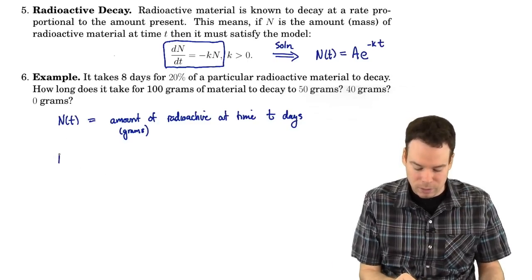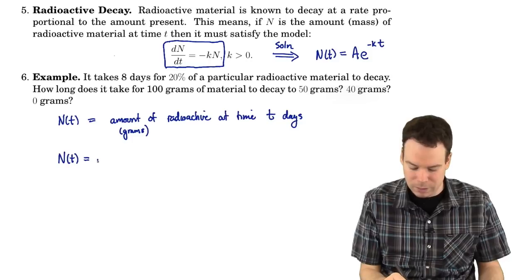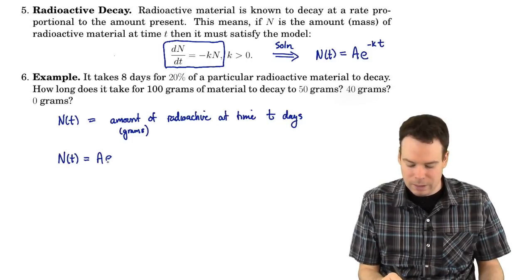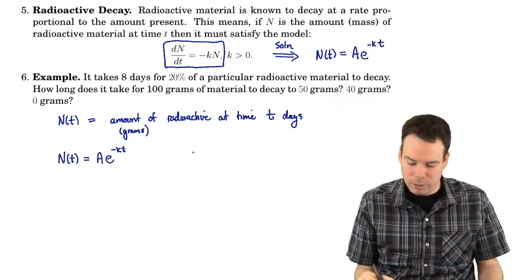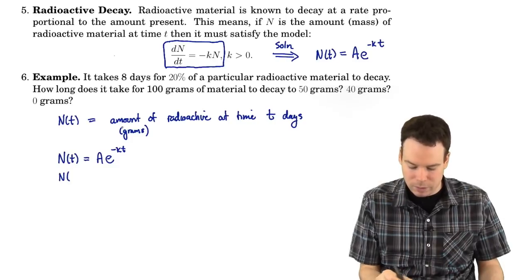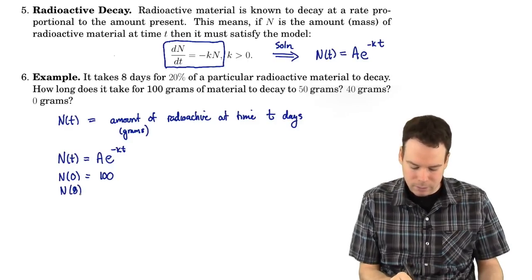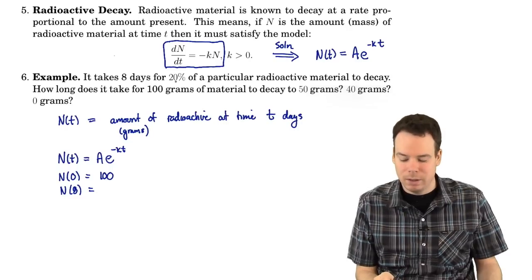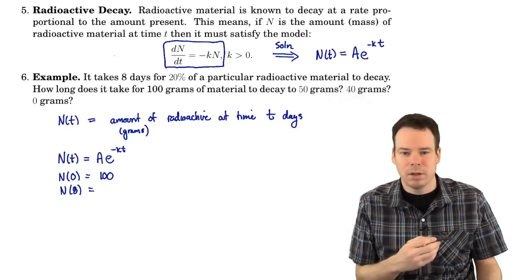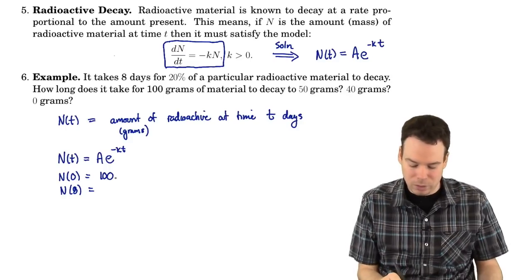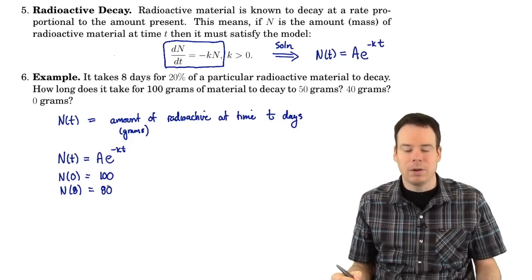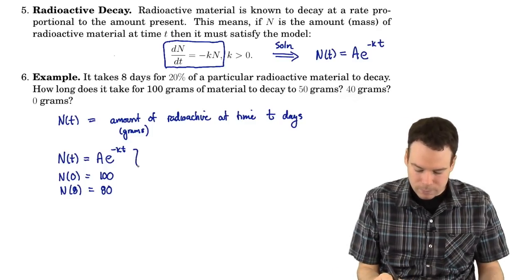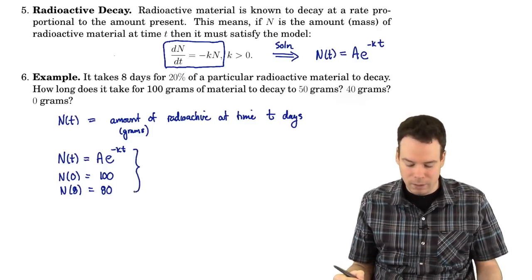What do we know about this function? Well, we immediately get that it has to be an exponential function from the differential equation it must satisfy. So n = ae^(-kt). What else do we know? In this problem we know the amount we start with is 100 grams. And we know that 8 days later, after 8 days, 20% of the material has decayed — so 20% is gone, and what's left is 80%. So if I started with 100 grams, 8 days later I'd have 80 grams. This is all the information we have about n, and that's enough.